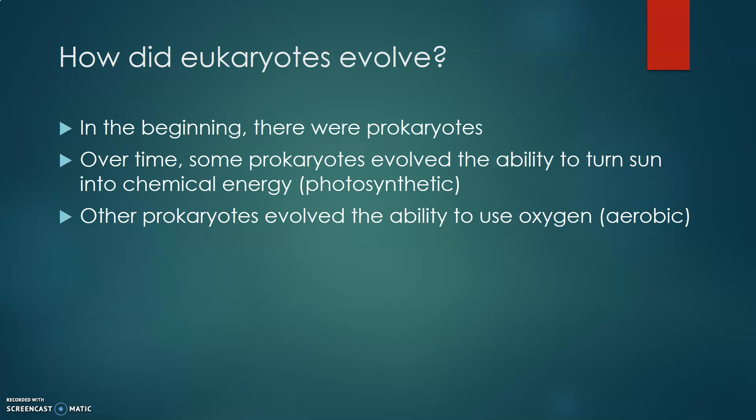We first need to talk about how eukaryotic cells evolved, and how one cell could acquire a nucleus as well as other organelles. In the beginning, there were bacteria — both archaea and bacteria — that are considered prokaryotes. Over time, some of these prokaryotes evolved the ability to turn sunlight into chemical energy through photosynthesis. Other prokaryotes evolved the ability to use oxygen to do their metabolic activities, which is known as aerobic, or oxygen-requiring.